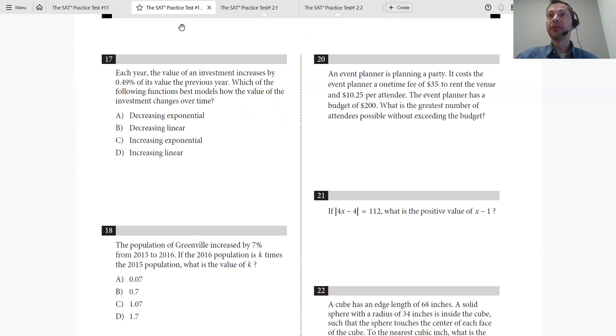Let's look at number 20. An event planner is planning a party. It costs the event planner a one-time fee of $35 to rent the venue and $10.25 per attendee. If we write it down, it can get much simpler.